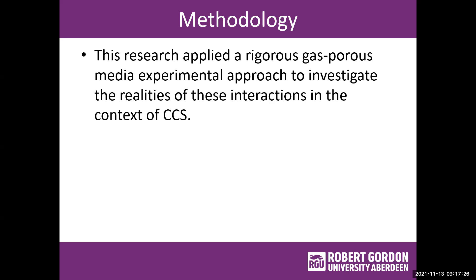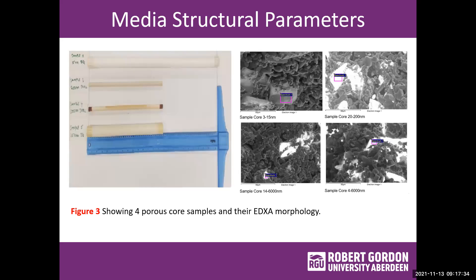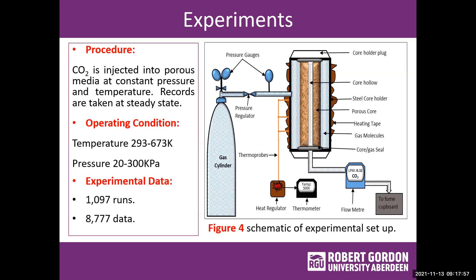The methodology used in this research is an experimental one. Basically, we looked for porous media that are similar and have similar structural parameters to those found in reservoirs. You can see four of the porous media used and the morphology as shown by the EDAS captures. The experimental setup is straightforward: we bring in CO2 gas from a gas cylinder, inject it into a porous media core holder, and allow it to permeate through the media, taking readings at steady state.